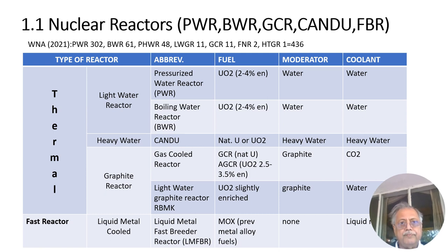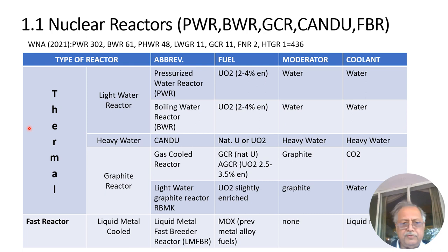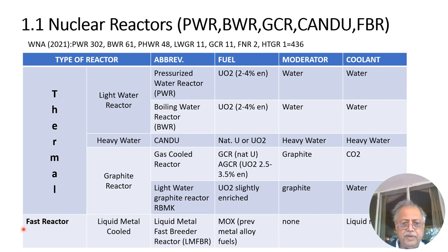Nuclear reactors are classified by energy into two broad groups: thermal and fast. The word thermal refers to the thermal spectrum of the neutron flux. Thermal neutrons have speeds of 2200 meters per second, corresponding to 0.025 electron volts, which is the thermal equilibrium at room temperature. Fast reactors have a higher energy spectrum, typically on the order of kilo-electron volts, and have no moderation — no slowing down of neutrons.